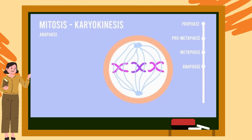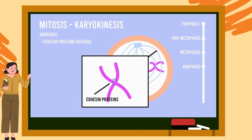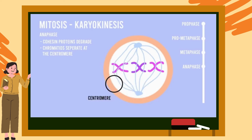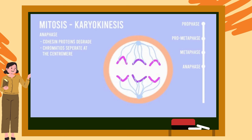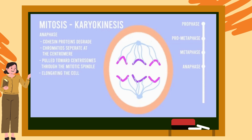The next step is anaphase. During anaphase, the cohesin proteins holding the chromatids together degrade, causing the chromatids to separate at the centromere. Each chromatid, now referred to as a chromosome, is pulled toward the centrosome located at the opposite poles of the cell. This is done by moving the chromosome through the microtubule structure formed at the mitotic spindle.